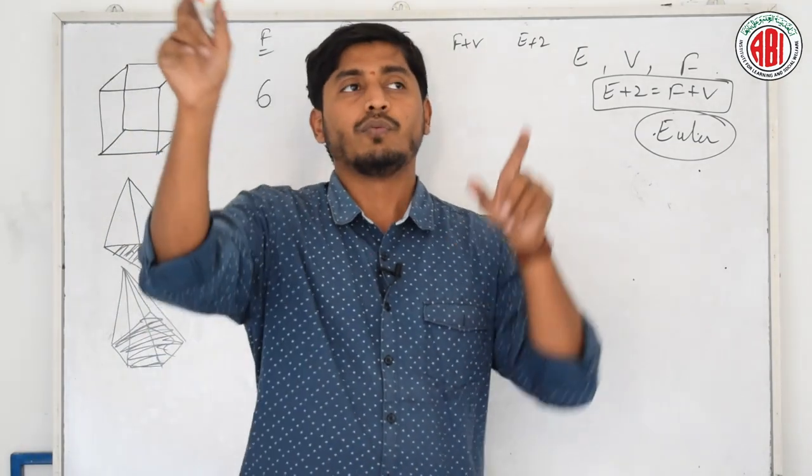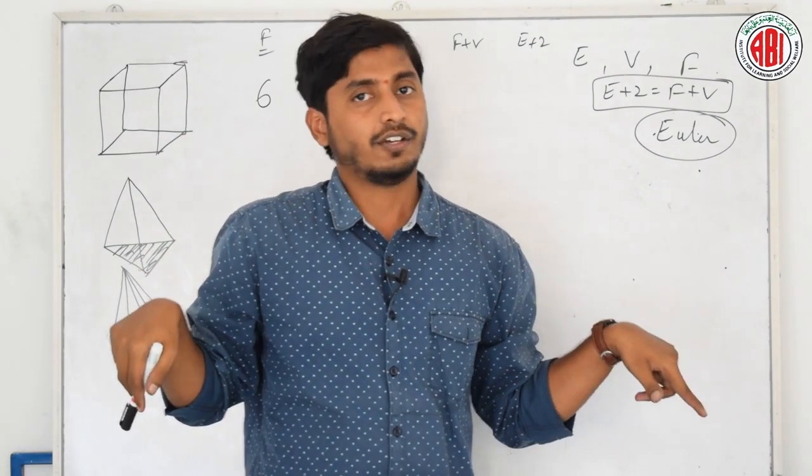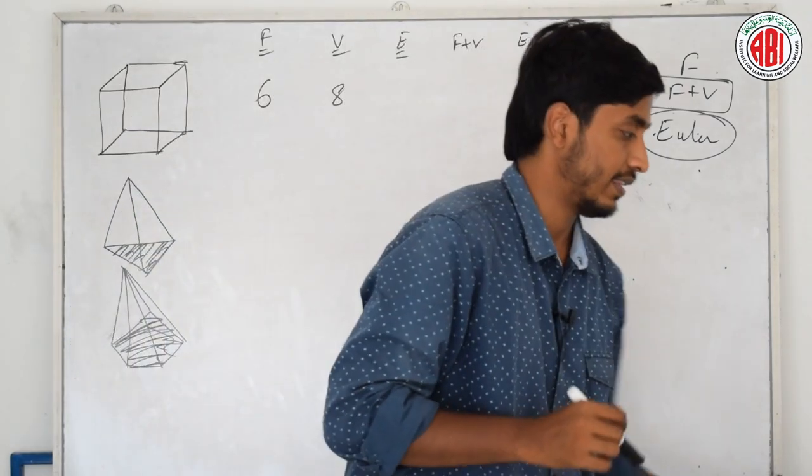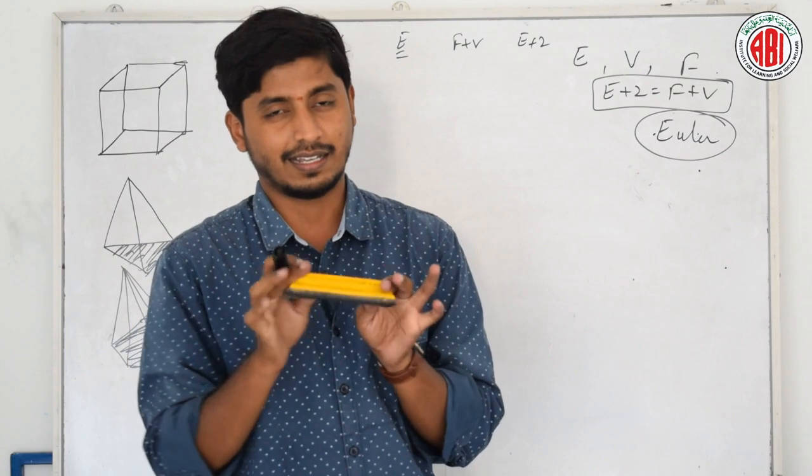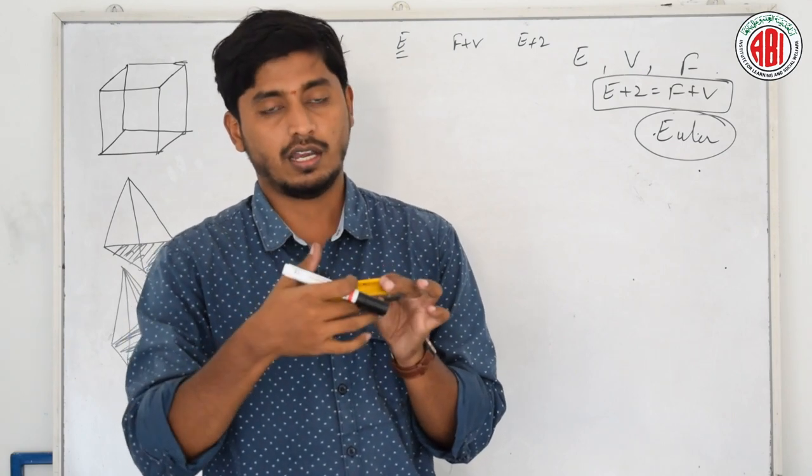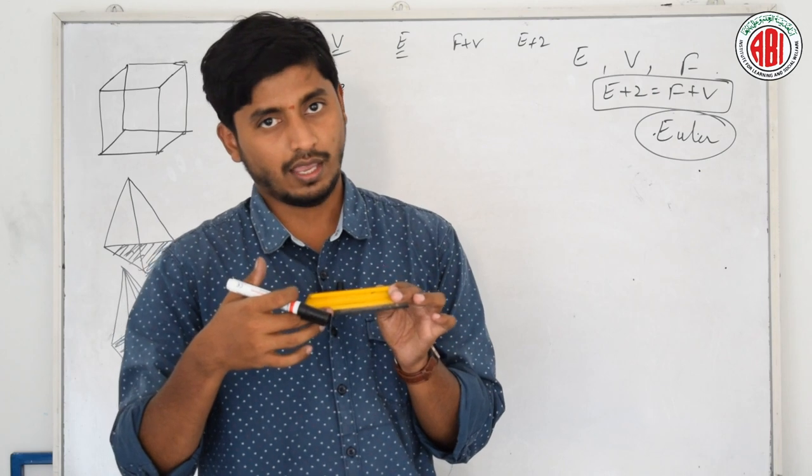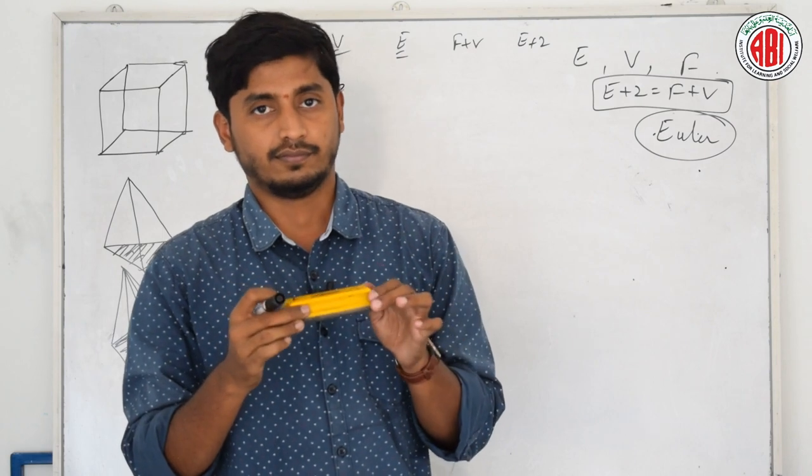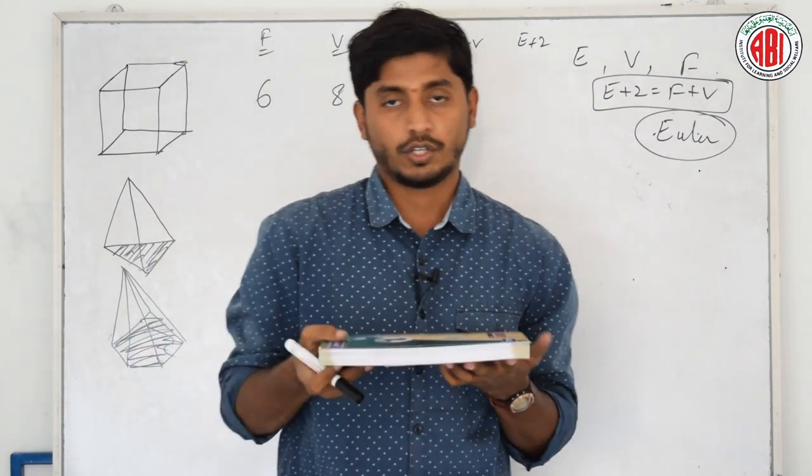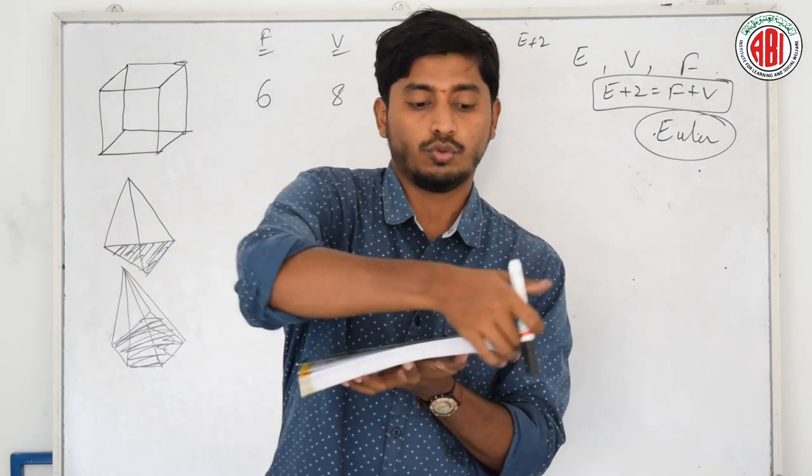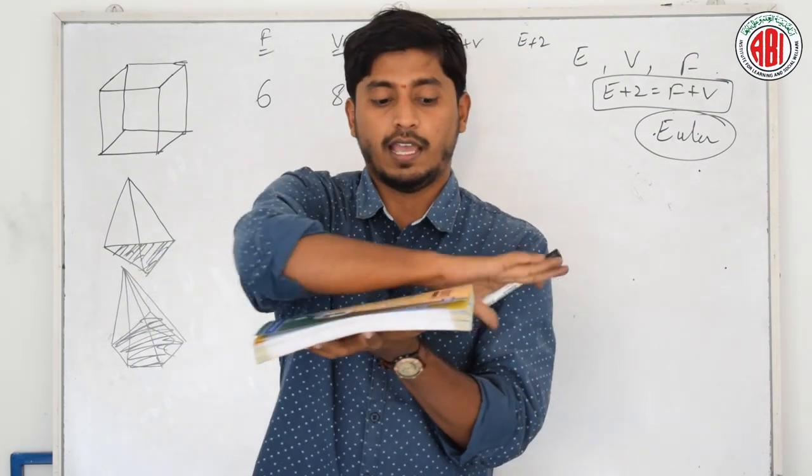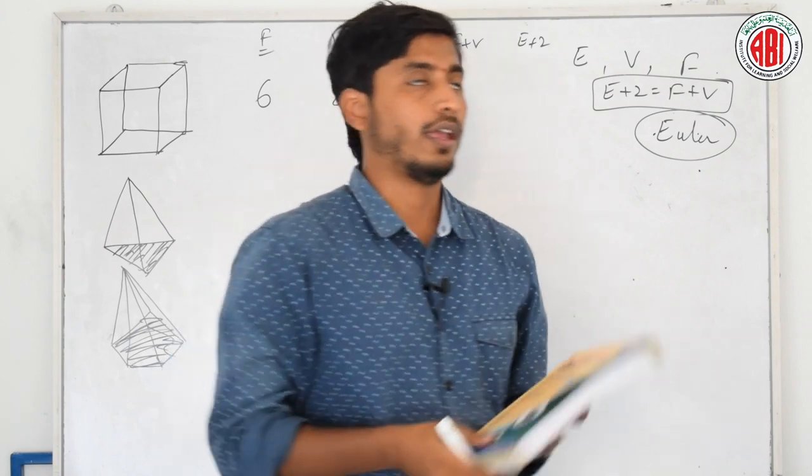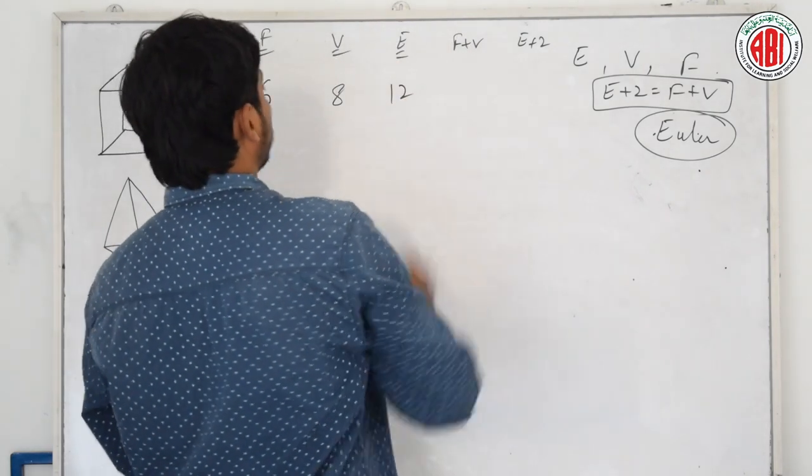How many vertices? 1, 2, 3, 4, 5, 6, 7, 8. Therefore, it has 8. How many edges? 1, 2, 3, 4, 5, 6, 7, 8, 9, 10, 11 and 12. Therefore, it has 12 edges.